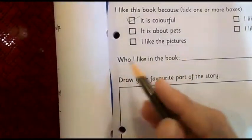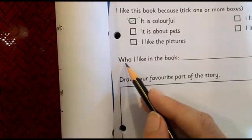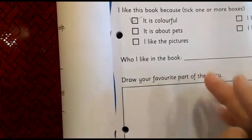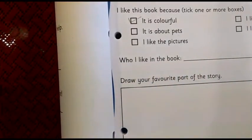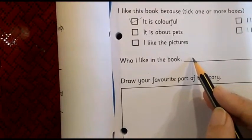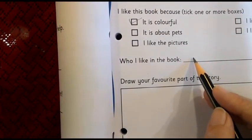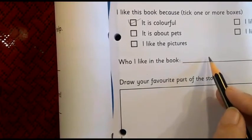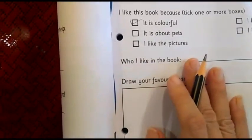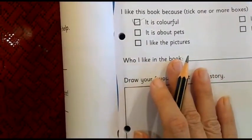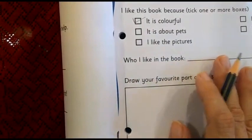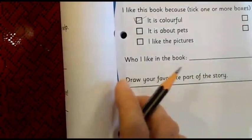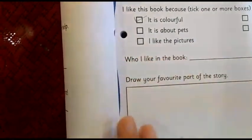Now let us move on to the next section: who I like in the book — and there is a dash. If you like Ron in this book, write Ron's name. If you like mommy in the book, write that. If you like daddy in the book, write that. It's up to you — whoever you have liked. If you have liked the dog or the black cat, you can write that here. For spelling, you can refer to the storybook.